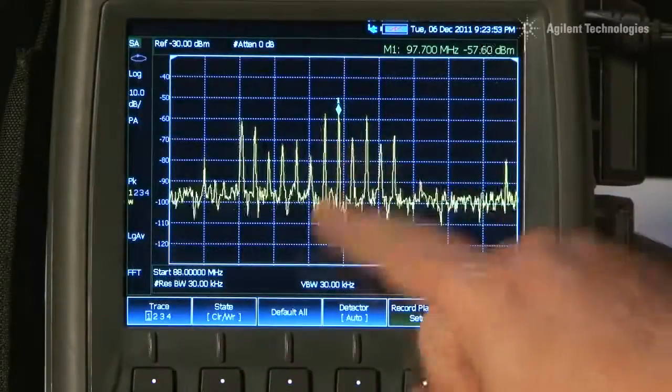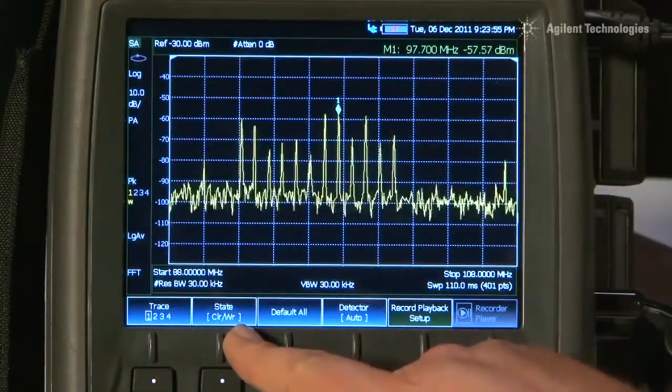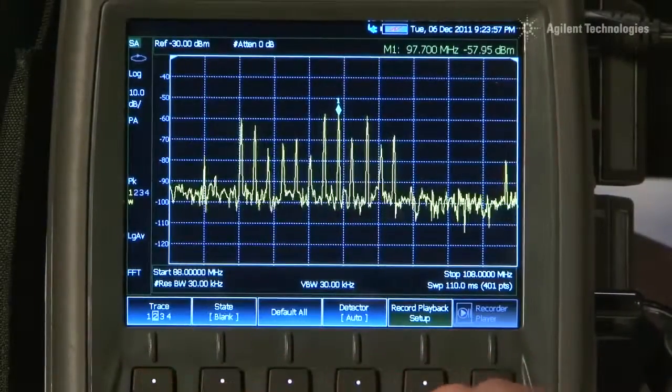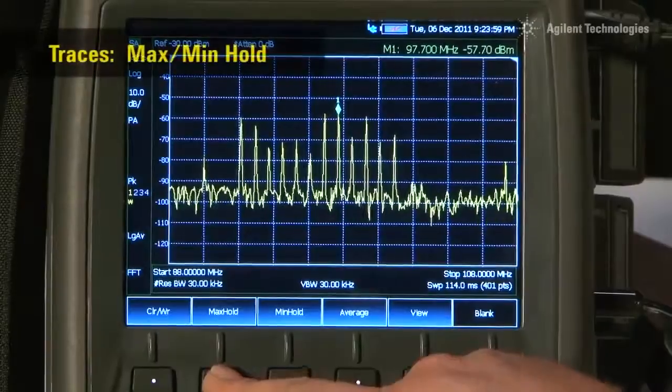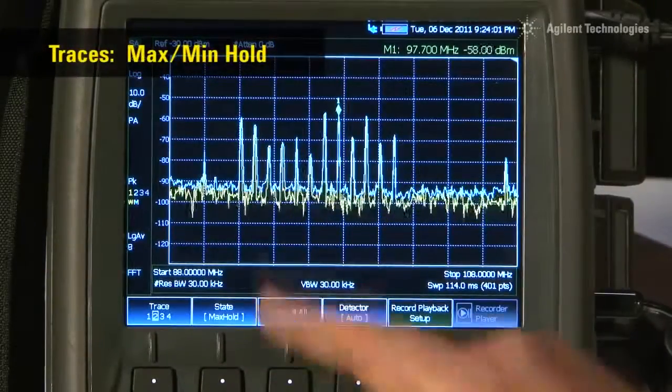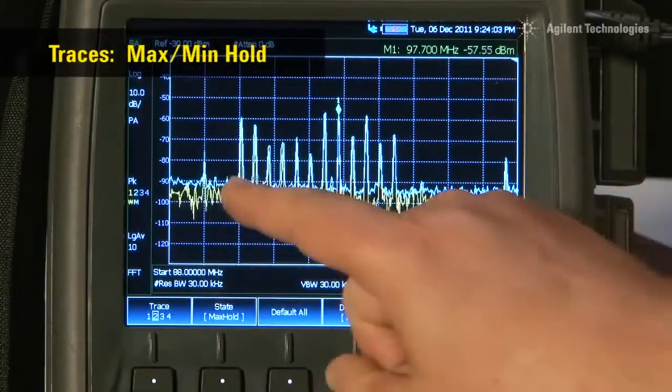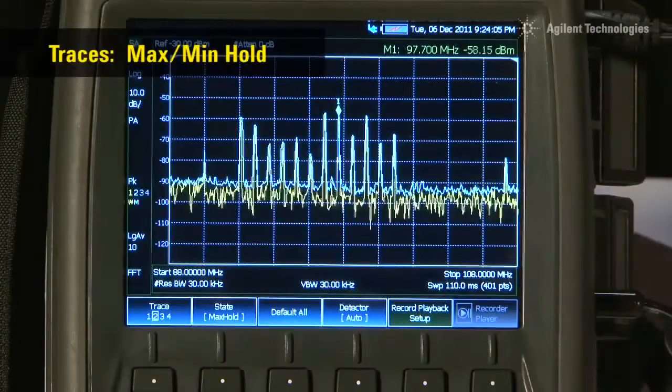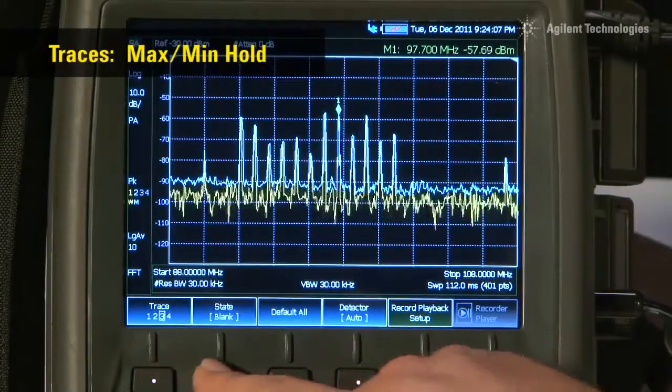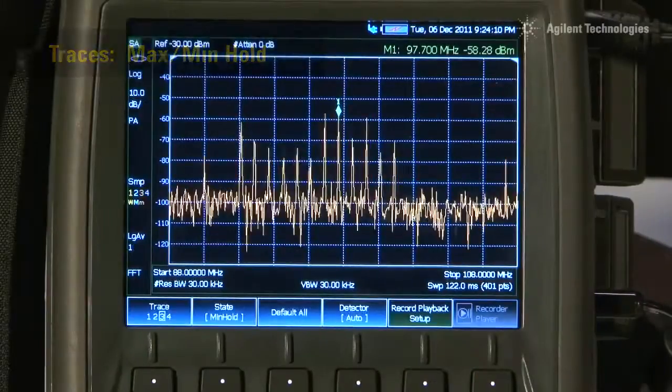If I press the trace button, you can see that trace 1 is here in yellow, performing a clear write operation. If I select trace 2, currently set to blank, but set it now to max hold, you will see in the blue or white trace it is storing the maximum value of the signal. And we have two more traces. Let us turn on trace 3 and set that to min hold.